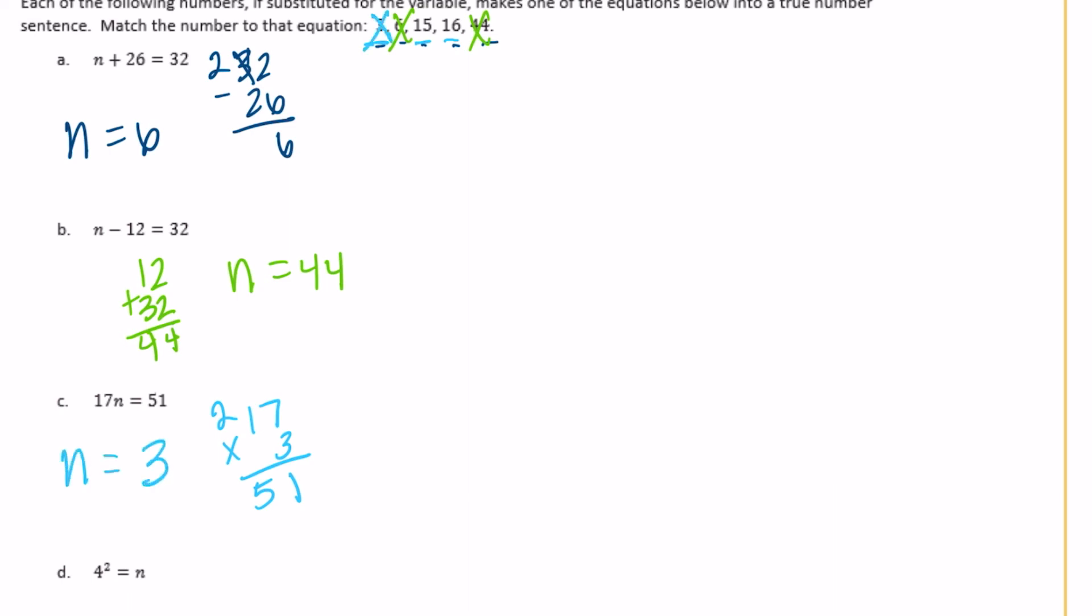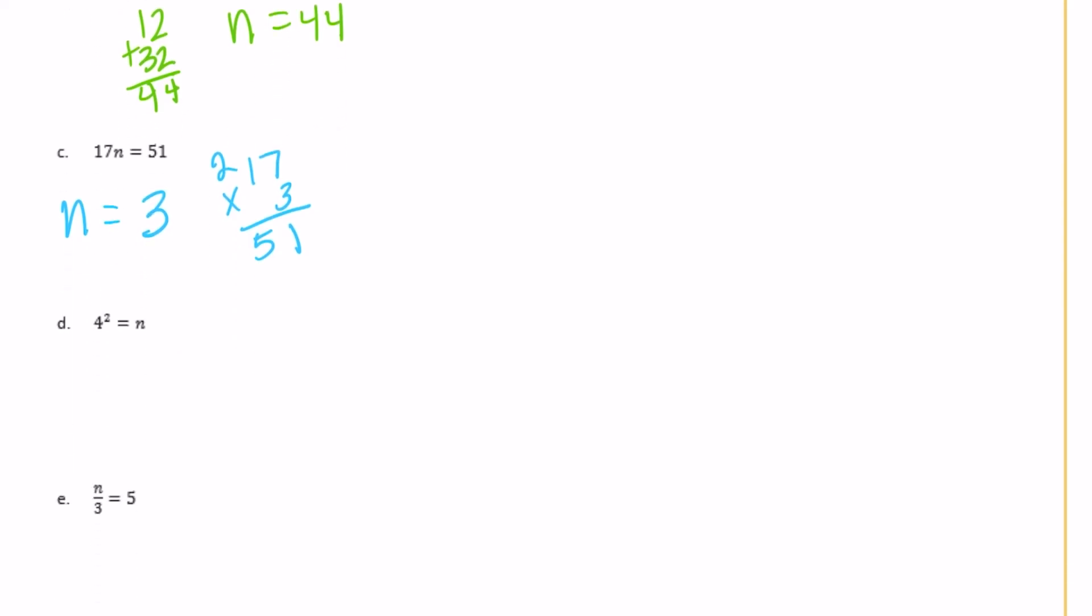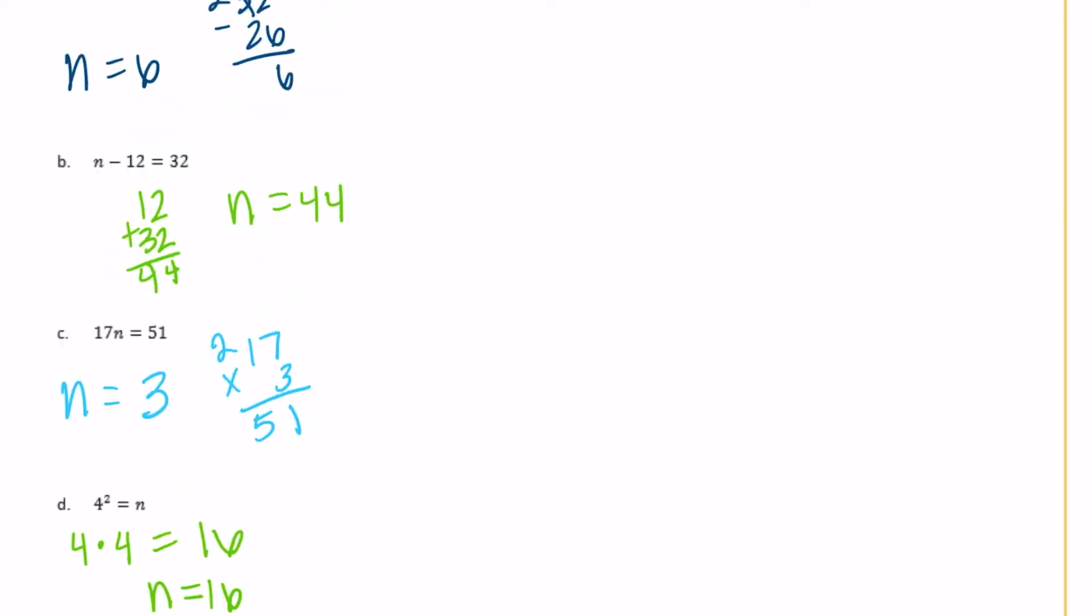So we have 15 and 16 left. So 4 to the second power, that means 4 multiplied by itself 2 times. So 4 times 4 would be equal to 16. So N is equal to 16 for this one.